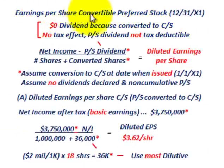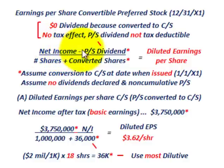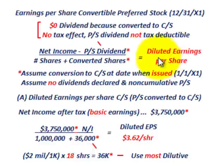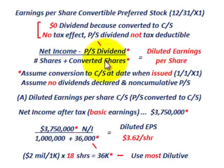Now let's look at earnings per share for preferred stock at 12/31/X1. The general formula: we use net income, but when working with preferred stock you have a dividend, so you'd reduce net income by the preferred stock dividend. For diluted EPS, that preferred stock dividend in the numerator and the converted shares in the denominator are the key items to address.